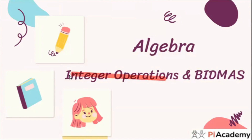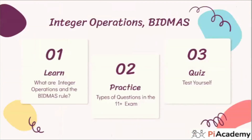It is a 1.5 hour class. This session is divided into three sections. First, we are going to learn: what are integers, how to use them, what are integer operations, what BIDMAS stands for, and what our priority is when we have two or more operations. BIDMAS - when is it applicable and what is the need for it? The session length is one and a half hours.